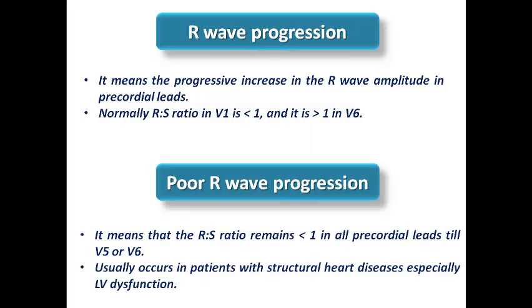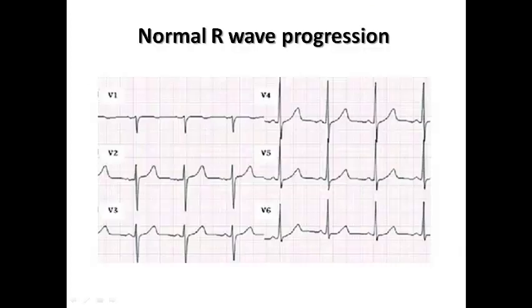We have another phenomenon called poor R-wave progression. Here the transition zone is delayed till V5 or V6, meaning the R-S ratio remains less than 1 in all precordial leads until V5 or V6. This usually occurs in patients with structural heart disease. Here we can see an example of normal R-wave progression in which the transition zone is at V4.